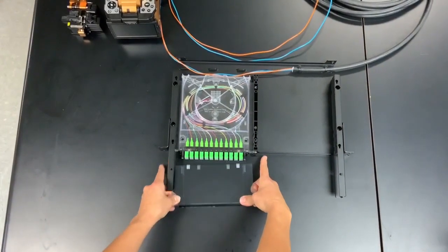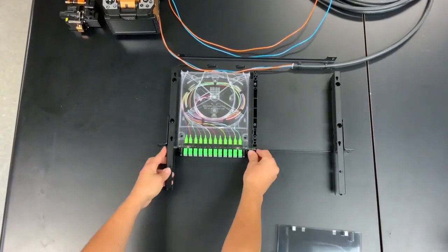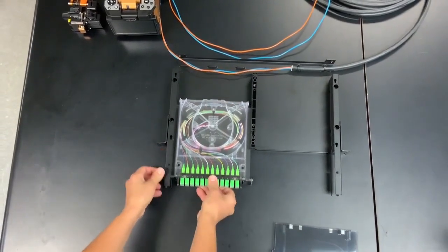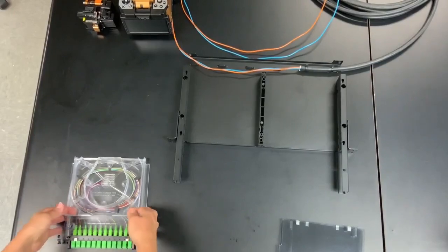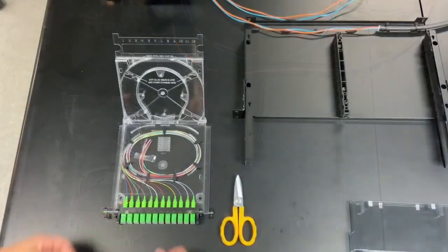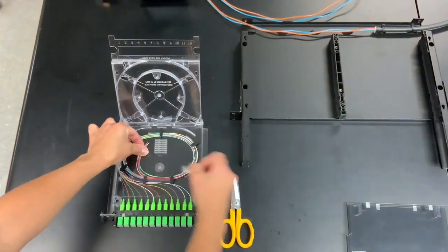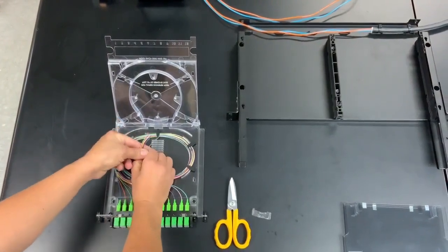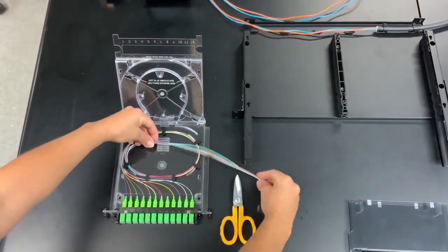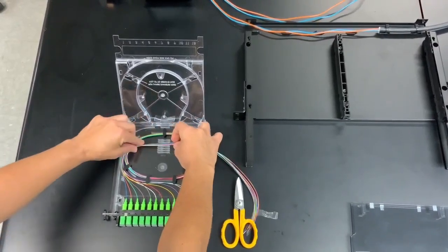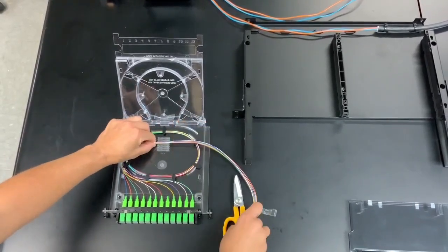First, begin by removing the cassette and placing it on your work area. With the top cover open, unwind the 900 micron pigtails until there is one full loop inside the raceway. Position the pigtails over the splice holder location and cut to the right side of it, leaving the correct length for splicing.